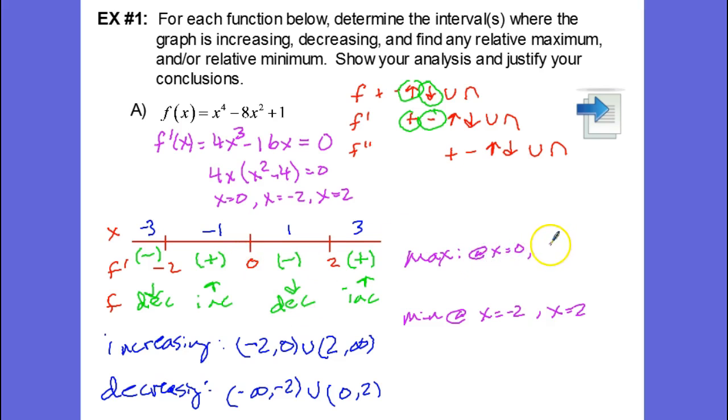And let's go ahead and find out what those min's and max's are. So let's find out what f of 0 is. f of 0 is 1. f of negative 2 is equal to negative 15. And that's actually the same as f of 2. So both min's have the same value.